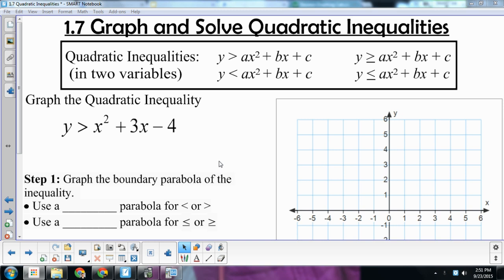We're going to be graphing and solving quadratic inequalities. The first kind of quadratic inequality we're going to work with is one in which there are two variables, both an X and a Y. An inequality has an inequality symbol instead of an equal sign: greater than, less than, greater than or equal to, or less than or equal to.